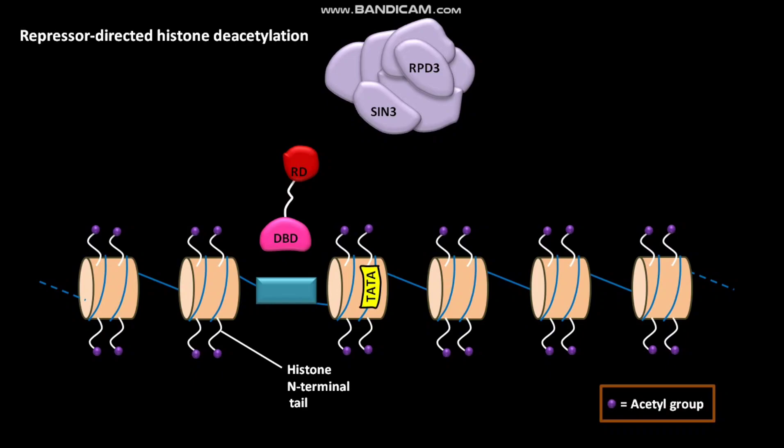The gene sequence consists of an upstream control sequence 1 or URS1. The repressor protein called UME6 has a DBD or DNA binding domain and a RD or repression domain.